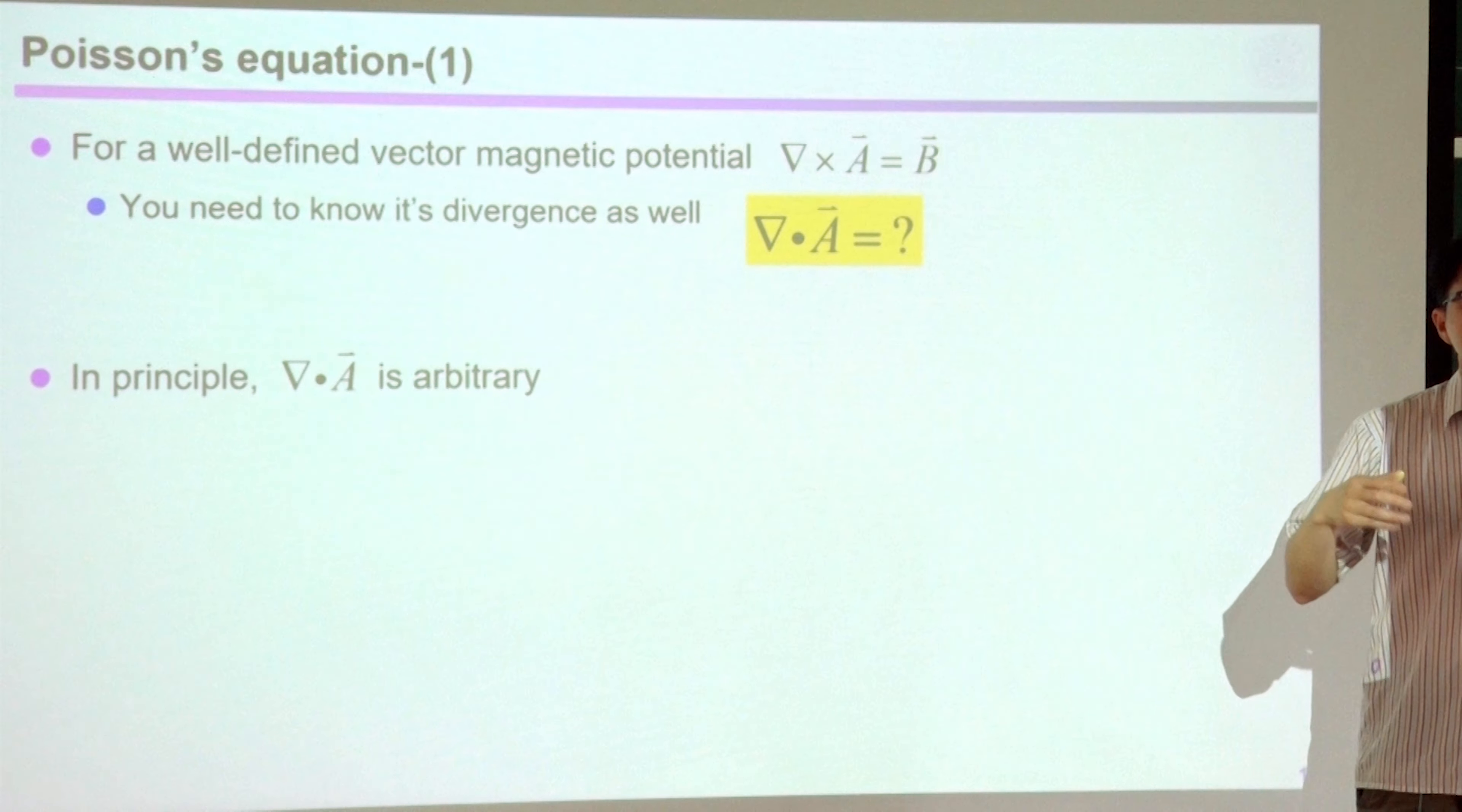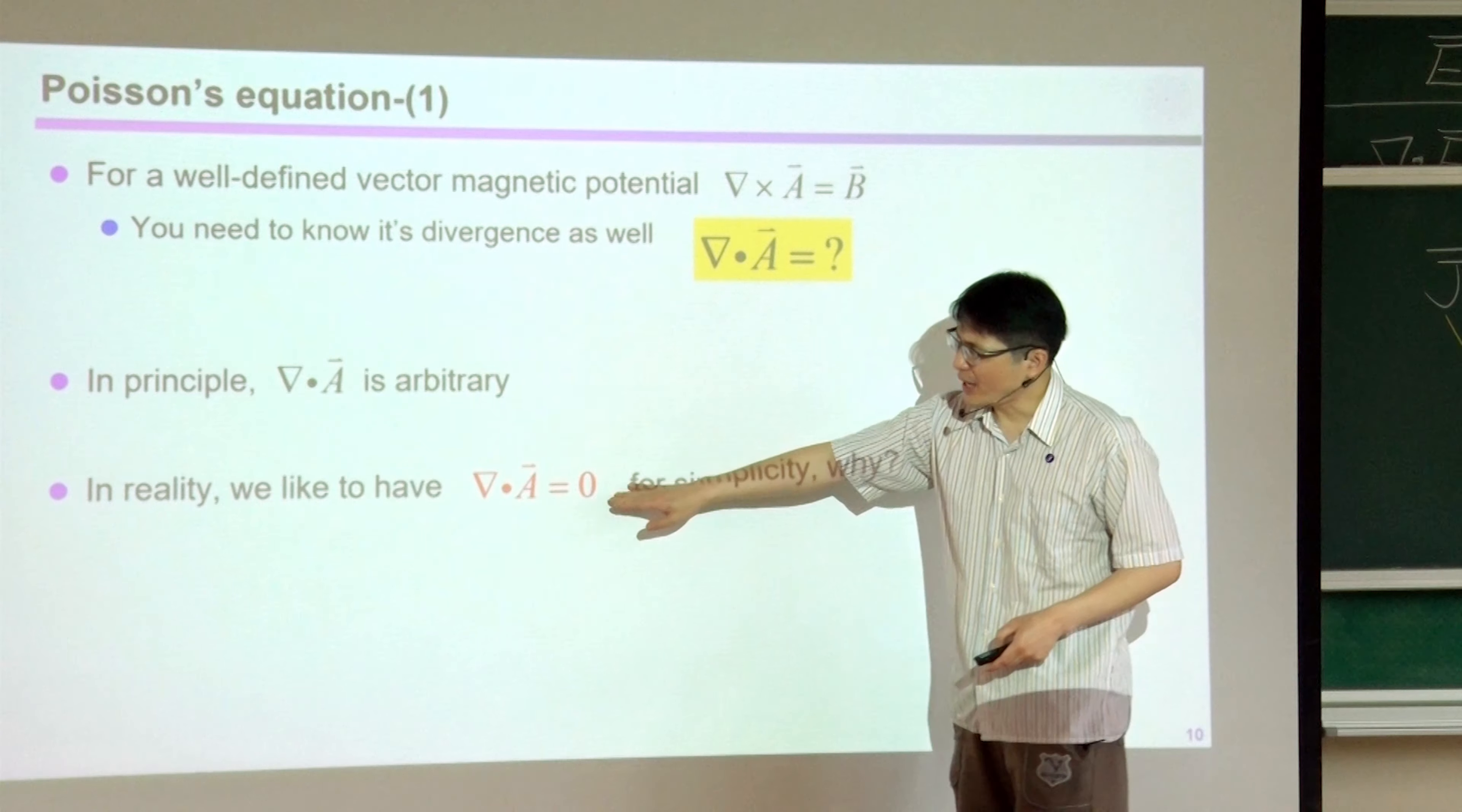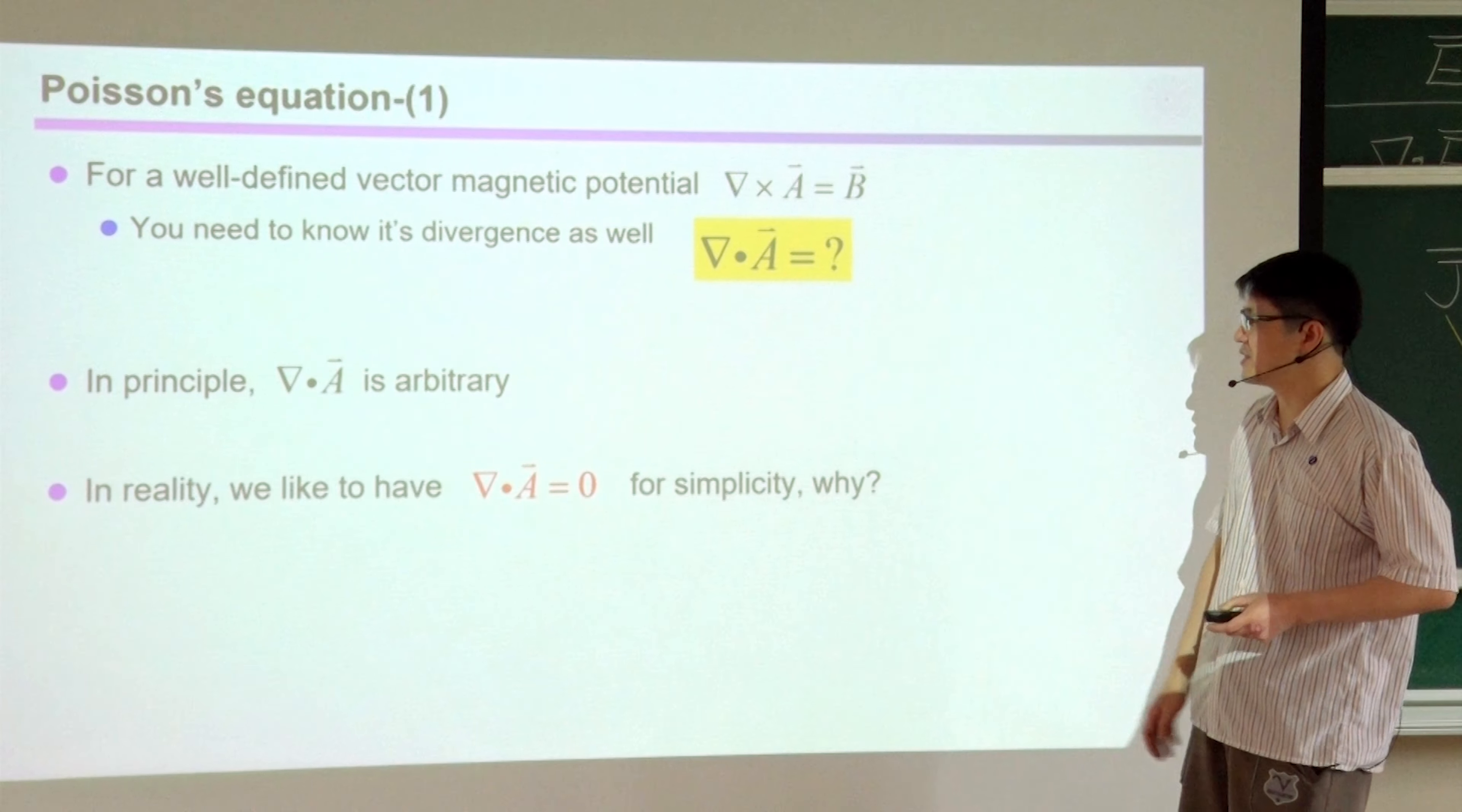But to be complete, we still have to define divergence of A to something. So in principle, although it's arbitrary, but we still want to define it so that A is completely defined vector quantity. So in reality, we like to have divergence of A equal to zero. Why? Because we're lazy. Something equal to zero is simple and straightforward. Is that the whole reason? No. It's not because we're lazy.